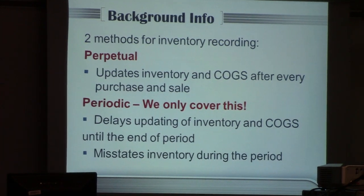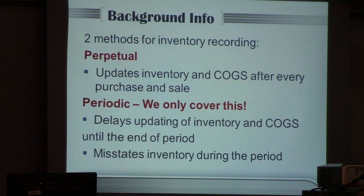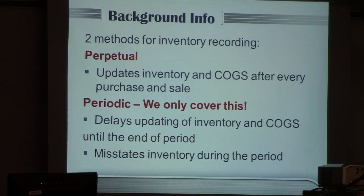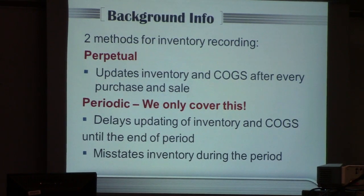There are two methods of recording inventory. One is called perpetual and the other is called periodic. In the perpetual method, you would have to record an extra journal entry every time you sell a product, and this becomes cumbersome. Most companies follow periodic, and that's the method we cover in this course. With periodic, there's a lag in inventory recording, but it is much more efficient and better for companies.